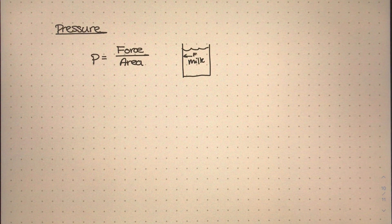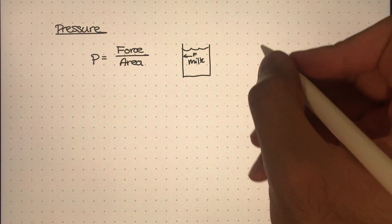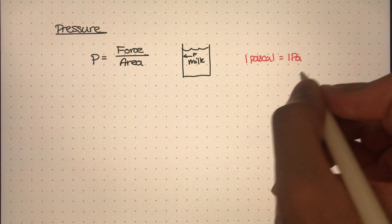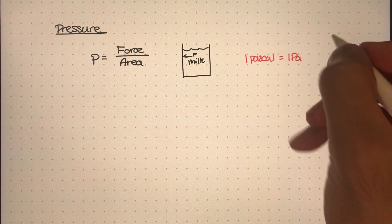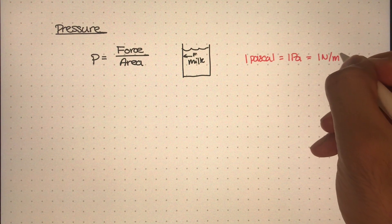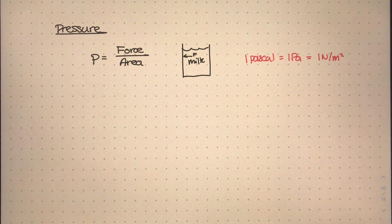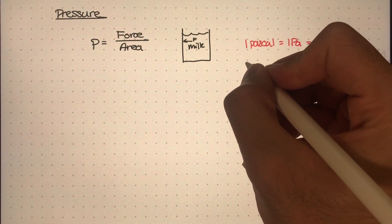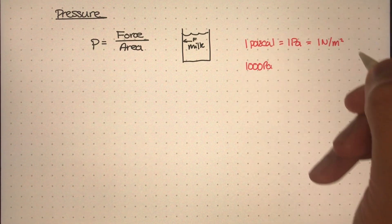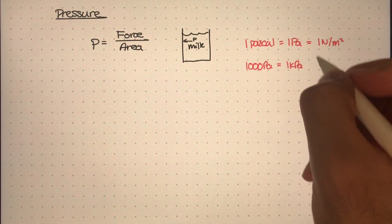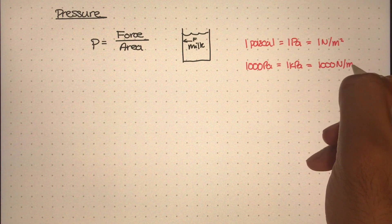We need units to measure this pressure. The units I like to work with are SI units, and that is what we call 1 Pascal, abbreviated as 1 Pa. This unit of pressure is 1 newton of force over a square meter, so newton per meter squared. So 1 Pascal equals 1 newton per meter squared. Another important conversion: 1,000 pascals equals 1 kilopascal, which is equal to 1,000 newtons per meter squared.